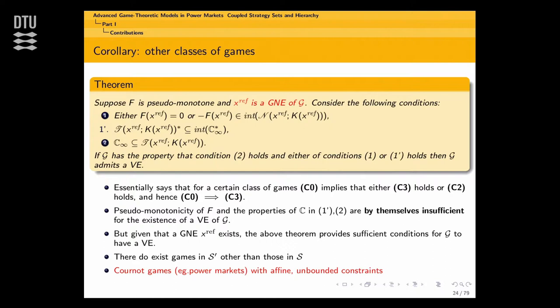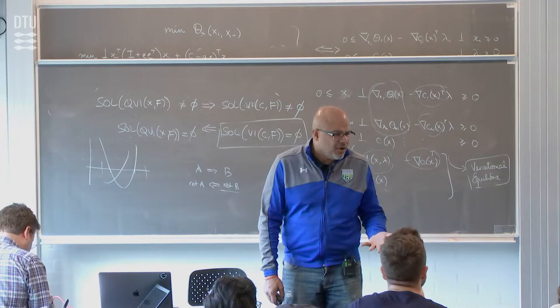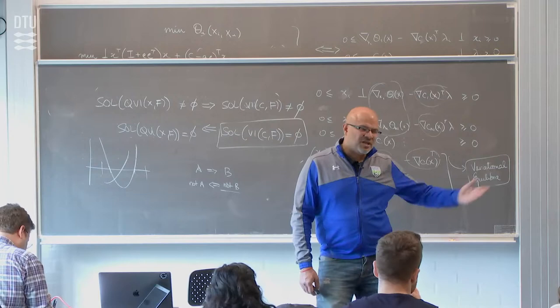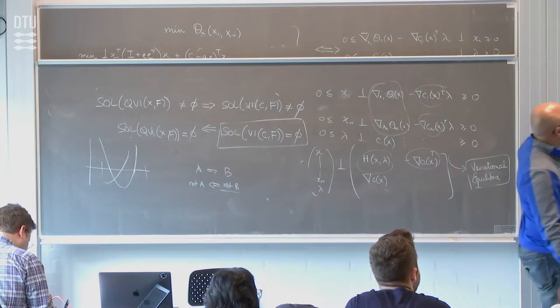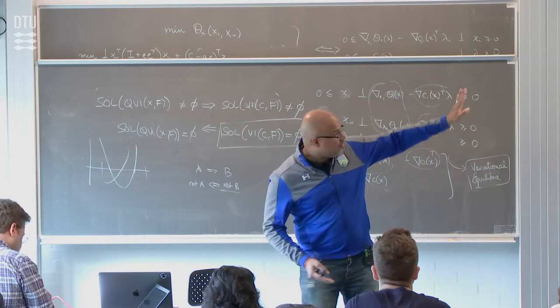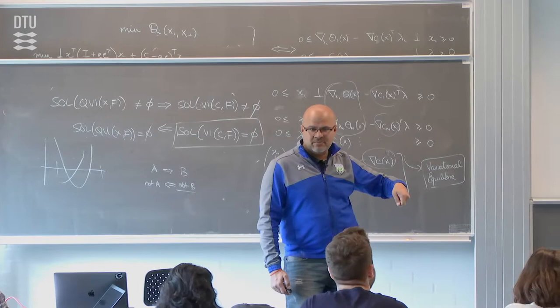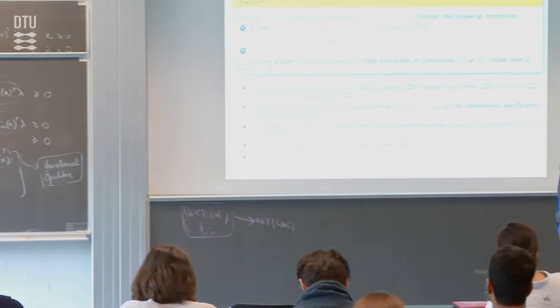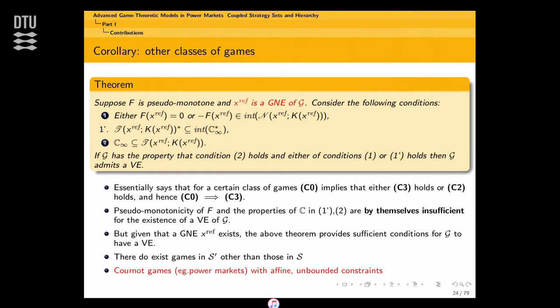You might ask: if you get a condition so strong that the VE always exists, then it does not help you, because the VE already exists independently. For instance, if the set is compact and the mapping is continuous, the VI already has a solution. So if you start with a GNE and already know the VI has a solution, what is the point? These conditions are not by themselves sufficient to claim an equilibrium exists for the VE. We have considered games where these conditions do not guarantee a VE exists on their own, but through the GNE relationship they guarantee the implication: if the GNE exists, the VE exists. You want conditions which are distinct from those used to directly show VI existence.